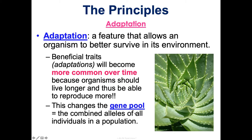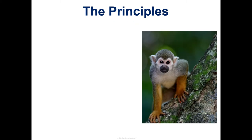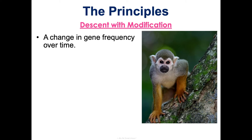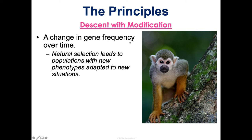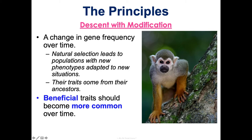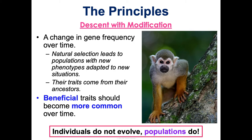This changes the gene pool — the combined alleles of all the individuals in the population — over time, and this is quantifiable; there's math to back it up. Last is descent with modification. When we look at a gene's frequency over time, meaning how common it is in a population, we'll see that change so that descendants are different from their ancestors. Natural selection leads to populations with new phenotypes adapted to new situations, but these traits come from their ancestors — they're inherited. Beneficial traits become more common over time because organisms living longer reproduce more, making their genes more common in the gene pool.